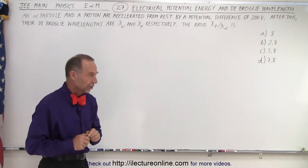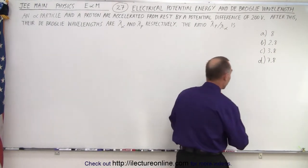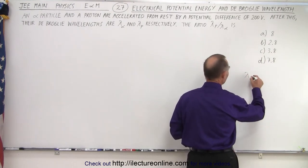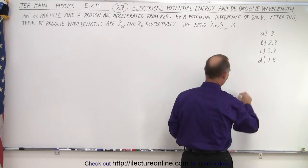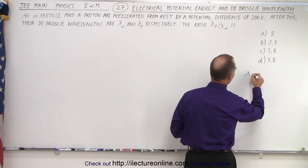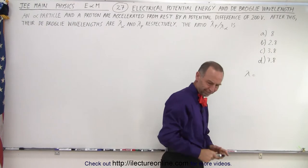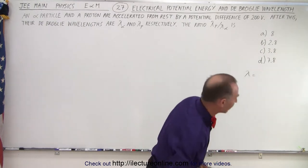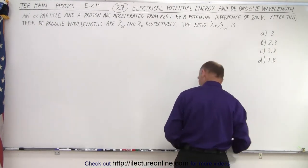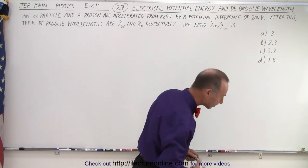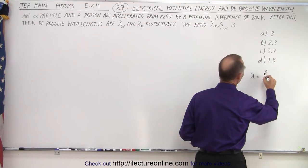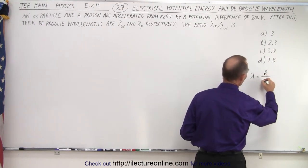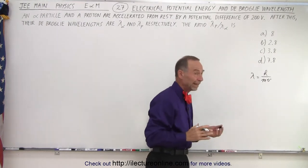The strategy is as follows. First, you need to know the equation for the de Broglie wavelength, which is lambda equals h — Planck's constant — divided by the momentum, which is the mass times the velocity.